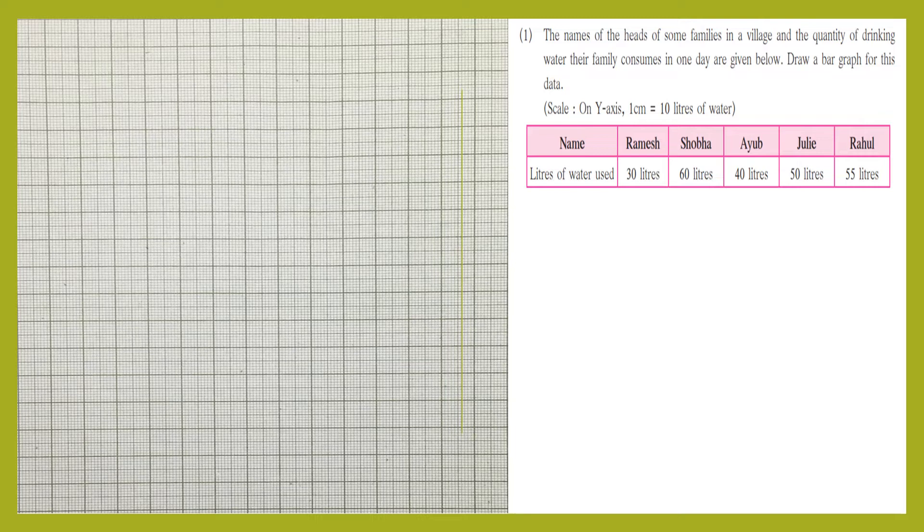Let's start with sum number one. The names of the heads of some families in a village and the quantity of drinking water the family consumes in one day are given below. Draw a bar graph for this data. The data is given in the form of a table: names and liters of water used by their families. Ramesh's family consumes 30 liters, Shobha's family 60 liters, Ayoub's family 40 liters, and Julie's family 50 liters of water.